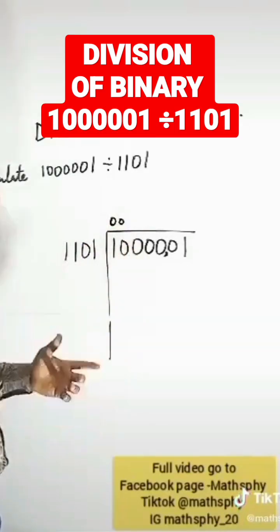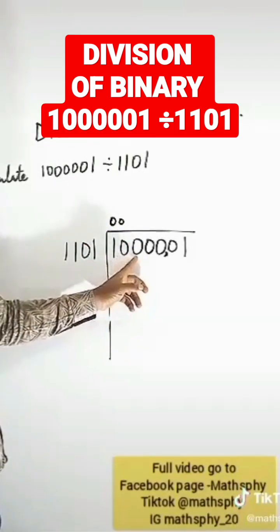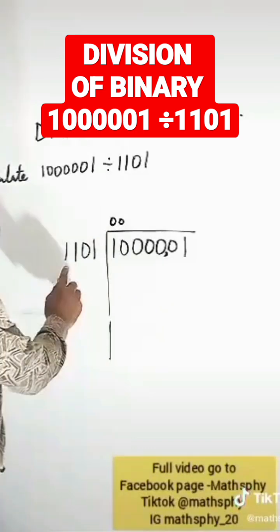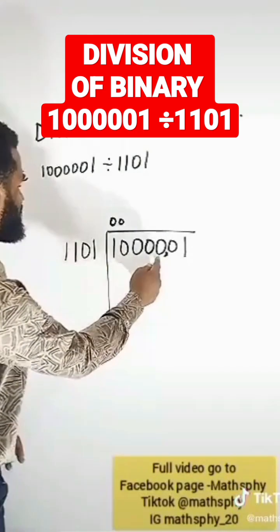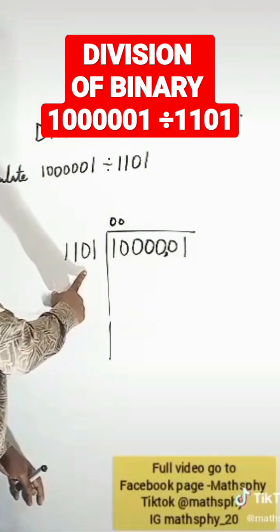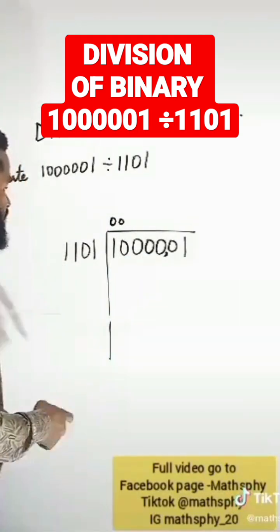So we have 1000001, that's four zeros, divided by 1101. You know that this 10000 is bigger than 1101, so in that case...